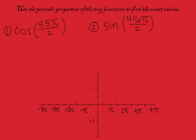We can use the periodic properties of the trig functions to figure out what these problems are, and specifically we're looking at problems when it's over 2. So both of these are going to be over 2.